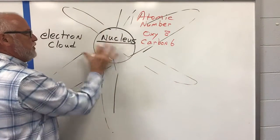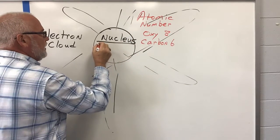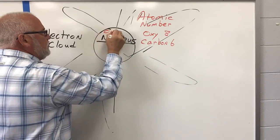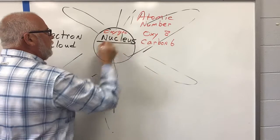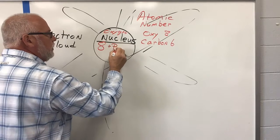That means inside the nucleus of various elements, the 92 elements, in oxygen, we'll call this one oxygen, there are going to be eight positively charged proton particles.